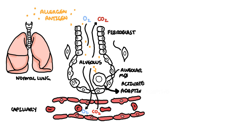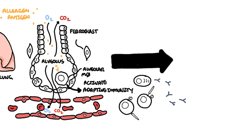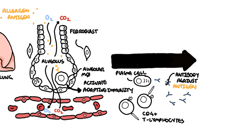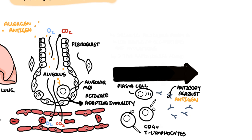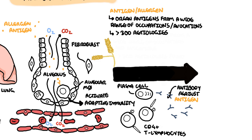The initial exposure activates the adaptive immune response, made up of T cells and B cells — the antibody-producing cells. The B cells' plasma cells develop antibodies against that antigen, typically IgG antibodies. The specific antigen or allergen that causes hypersensitivity pneumonitis is broad. A wide range of occupations and avocations results in contact with airborne organic antigens, and there are over 300 reported etiologies for hypersensitivity pneumonitis.